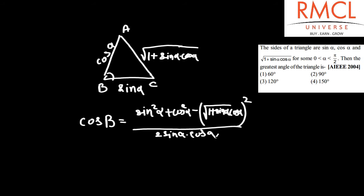Since sin²alpha + cos²alpha equals 1, this becomes (1 - (1 + sin alpha cos alpha))/(2 sin alpha cos alpha), which simplifies to -1/2. Therefore, cos B equals -1/2.